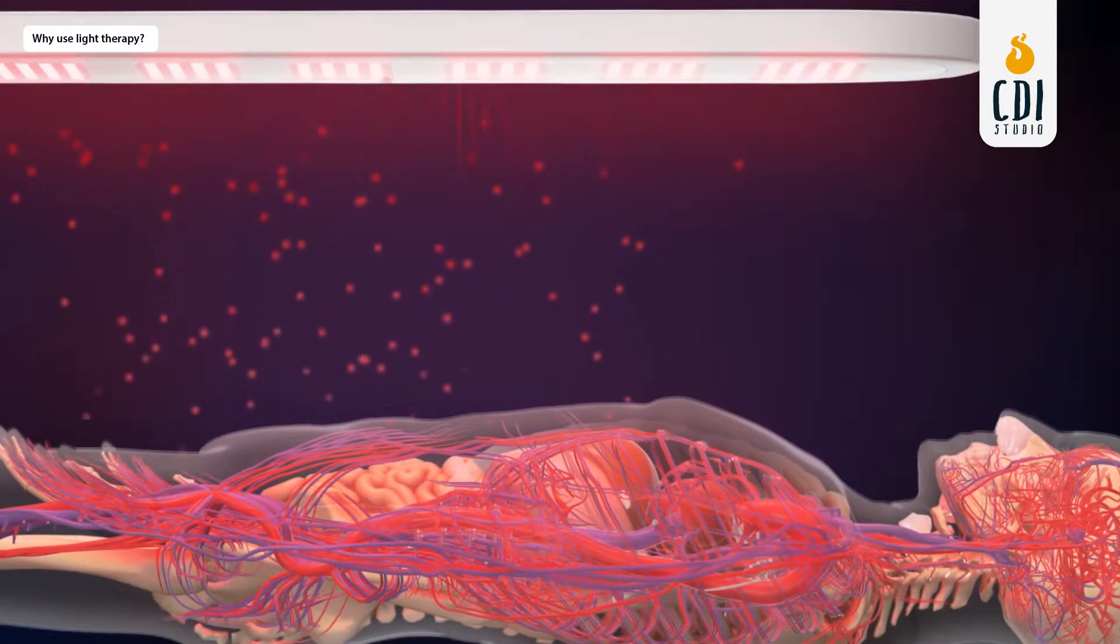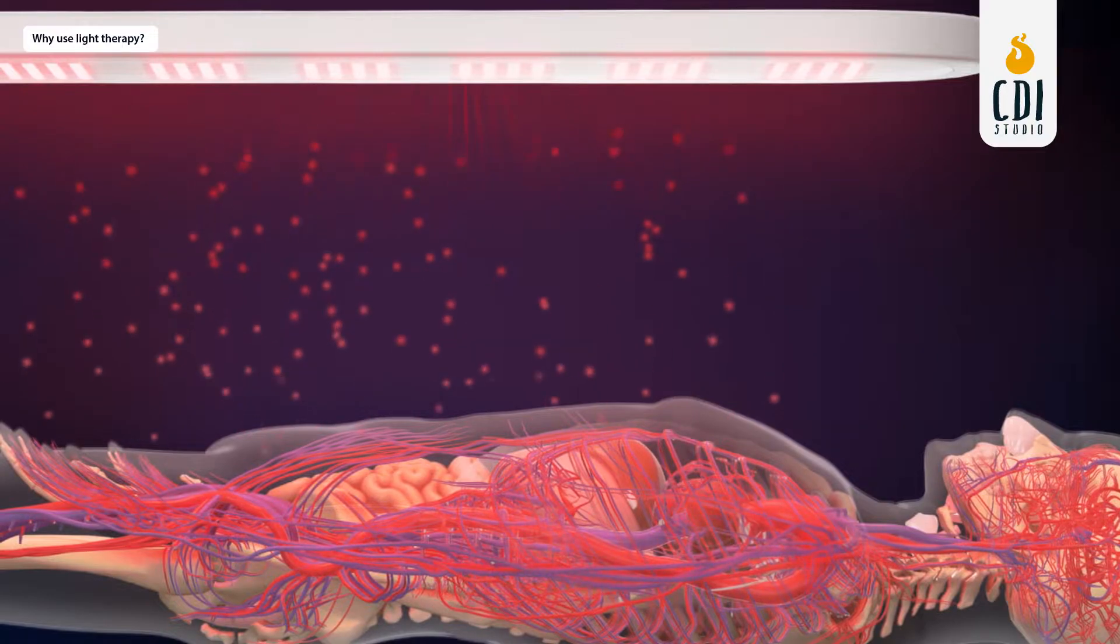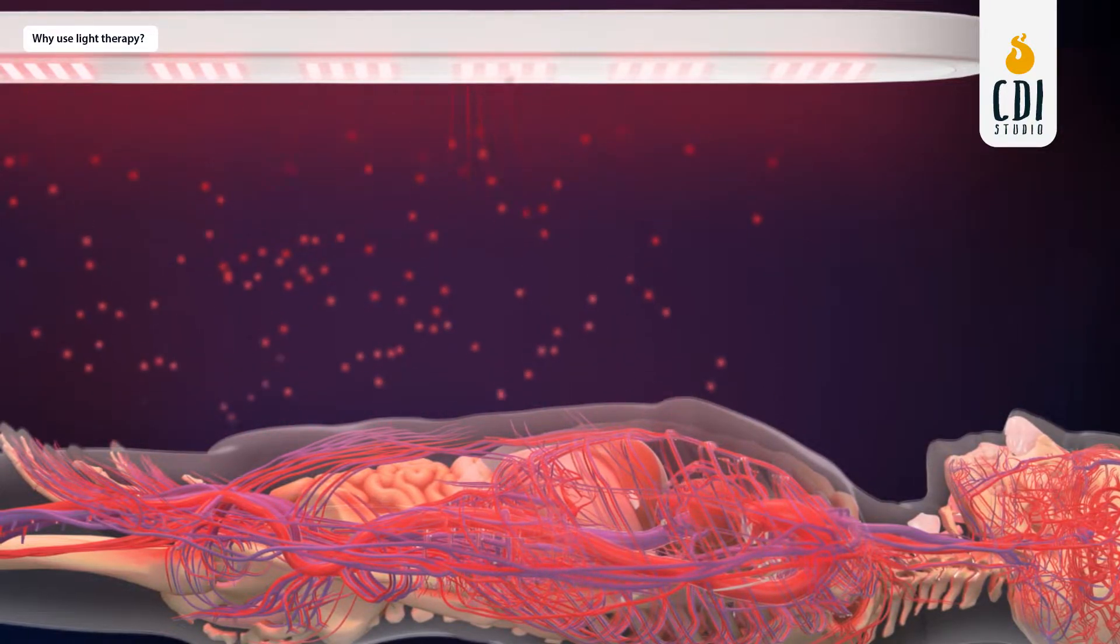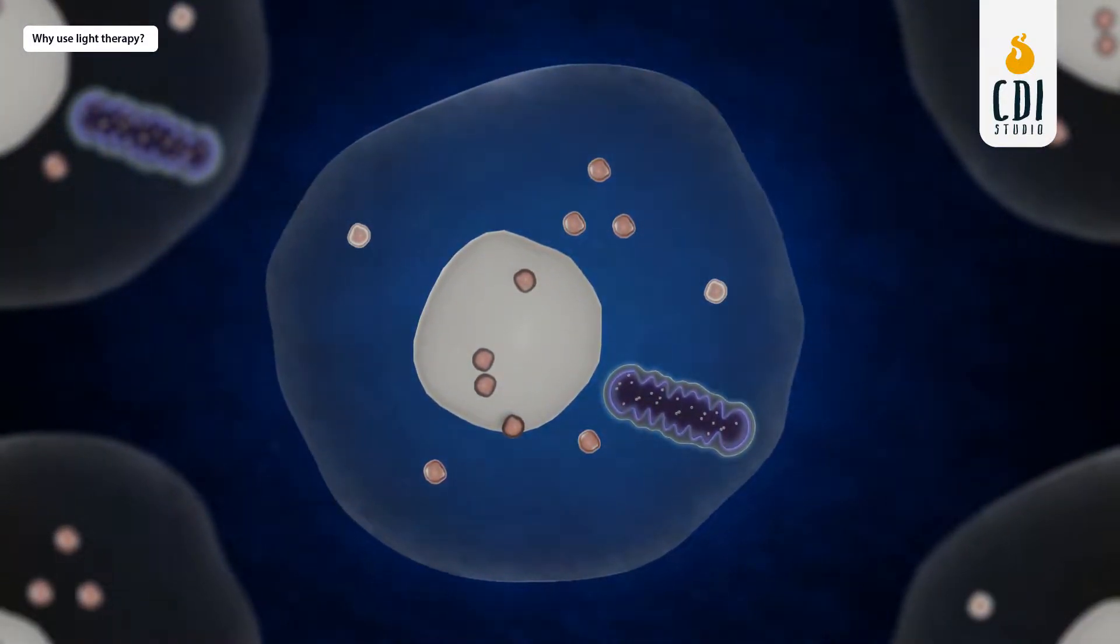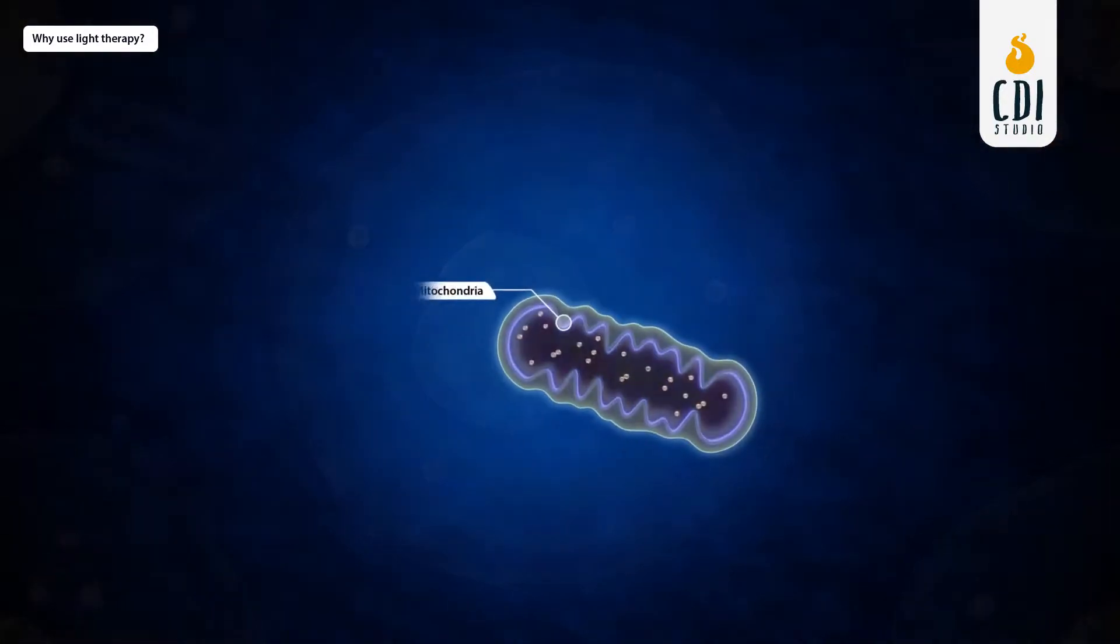This video illustrates how the use of light energy, when harnessed properly, can help promote improved wellness and healing. At the basic level, all cells in the body have a miniature power plant within it, called the mitochondria.